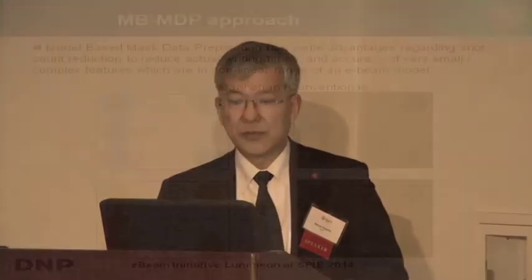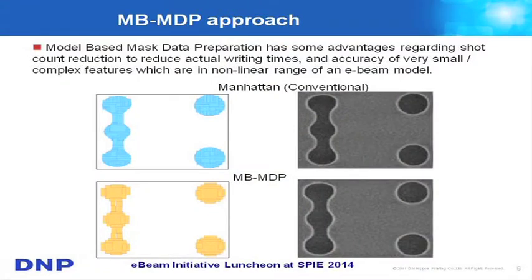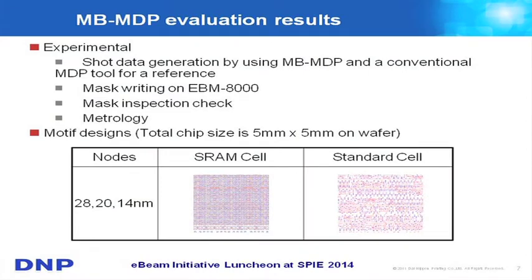We are working on a multi-beam approach to make a very fast writing system in the future, but we also need some kind of shot-count reduction method for existing tools. In the past, we evaluated the MVMDP technology with test features using curved linear patterns, and we confirmed that MVMDP reduced the shot-count to 25 percent with no degradation of curved linear features on the mask. The fundamental technology is already confirmed, so this time we start to evaluate MVMDP with production-like features.